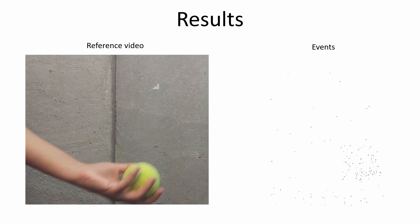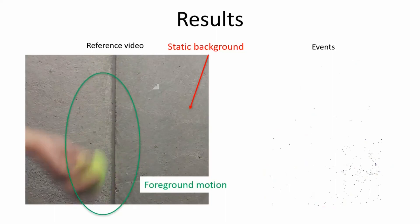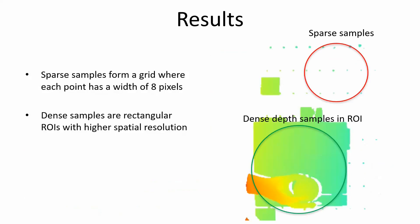In this case, the motion consists of the motion of the hand as well as that of the tennis ball. Our approach again results in sparse samples in the static areas and dense samples in the dynamic areas of the scene.